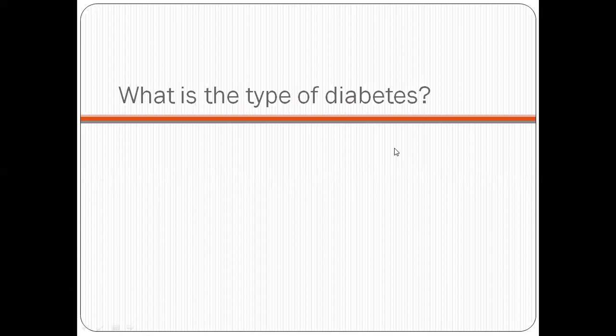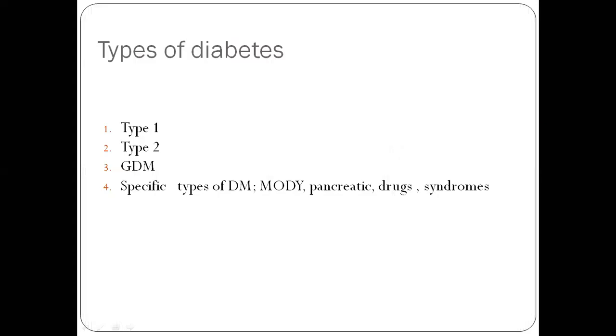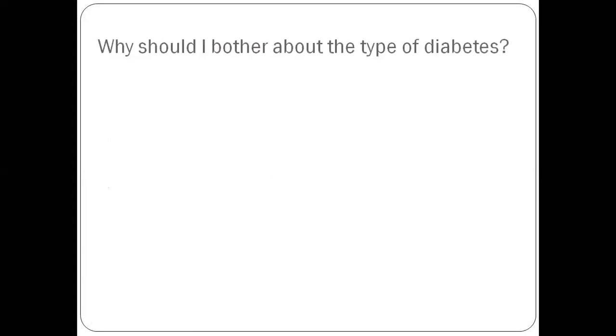What is the type of diabetes? There are four types: Type 1 is autoimmune. Type 2 is your garden variety of diabetes. Gestational diabetes. And specific types including genetic, drugs, pancreatic disorders, and other genetic syndromes. Why should I bother about the type? Now 90% of the diabetes is type 2 diabetes. Therefore, if I say all diabetes is type 2 diabetes, I'm going to be correct 9 times out of 10. The question is, is this 90% accuracy good enough?